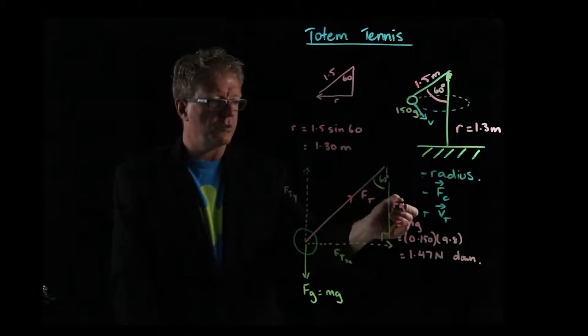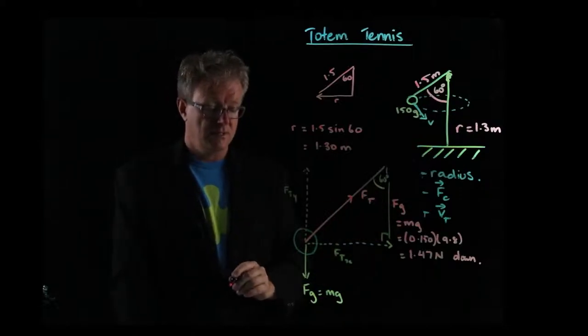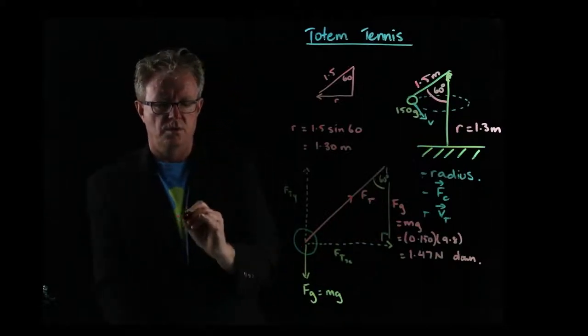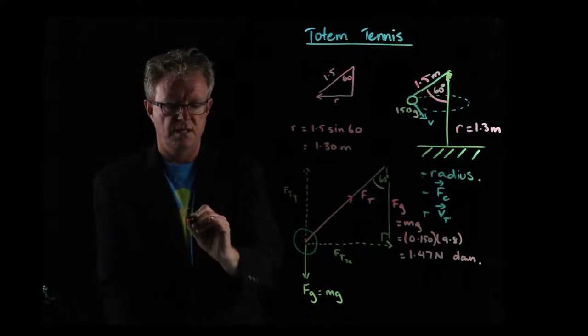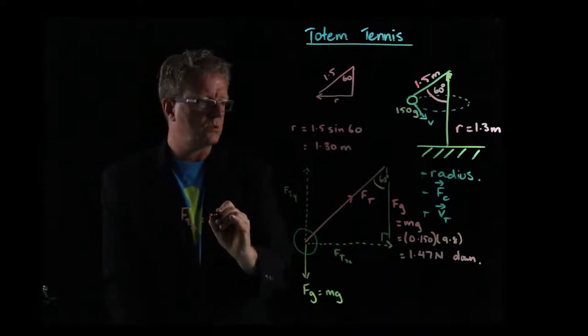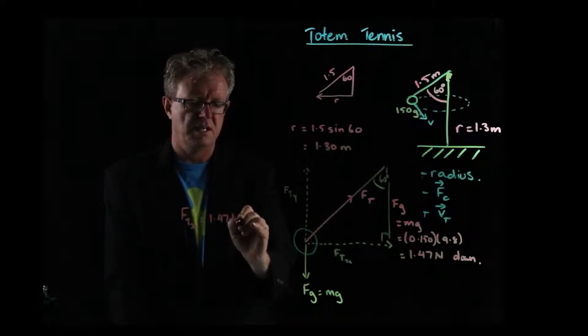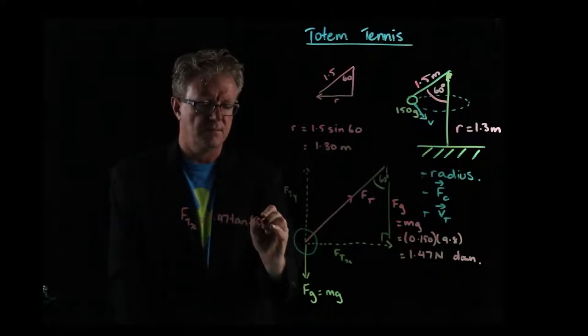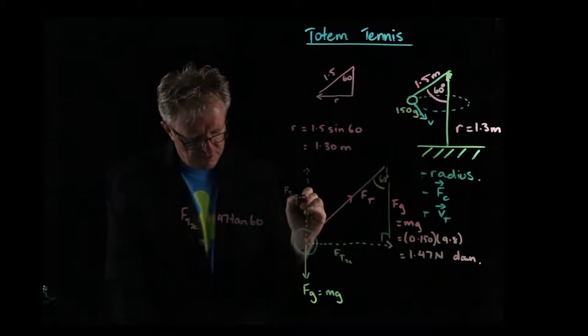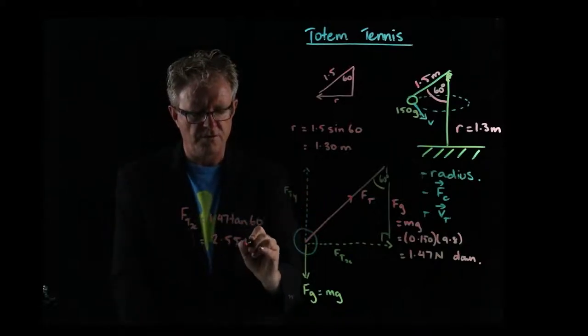And so it's opposite over adjacent. So we've got tan now. So we can say that Ftx is equal to 1.47 tan 60. And that works out to be 2.55 newtons.